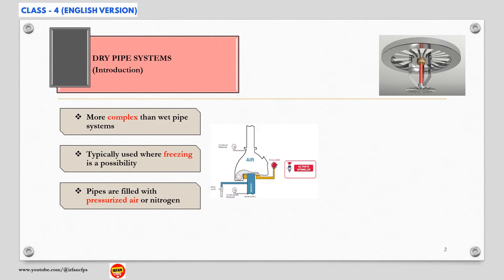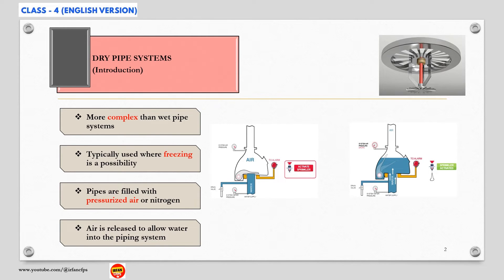Dry systems also employ automatic sprinklers. As you can see from the figure shown on your screen, these systems do not contain any water in the piping network above the dry type valve to avoid freezing. In this type, the pipes are filled with pressurized air or nitrogen above the dry type valve. Upon activation of sprinkler system, air is released and water flows through the piping network connected to the water supply.